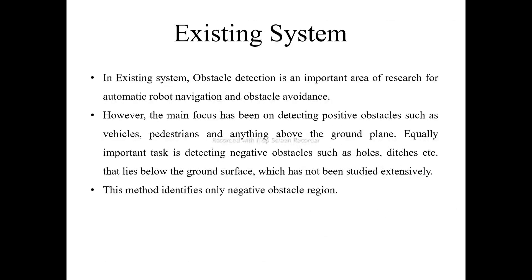This is our existing system. In the existing system, obstacle detection is an important area of research for automatic robot navigation and obstacle avoidance. However, the main focus has been on detecting positive obstacles such as vehicles, pedestrians, and anything above the ground plane. An equally important task is detecting negative obstacles such as holes and ditches that lie below the ground surface, which has been studied extensively.